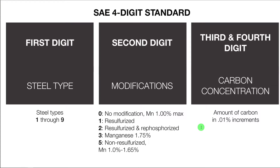The SAE uses a four-digit standard to classify these different steels. The first digit is the steel type, and there are nine of them. The second digit tells you the modifications made to it. If it's a zero it means no modification; if it's a one it means it's resulphurized; two is resulphurized and rephosphorized, and so on and so forth.